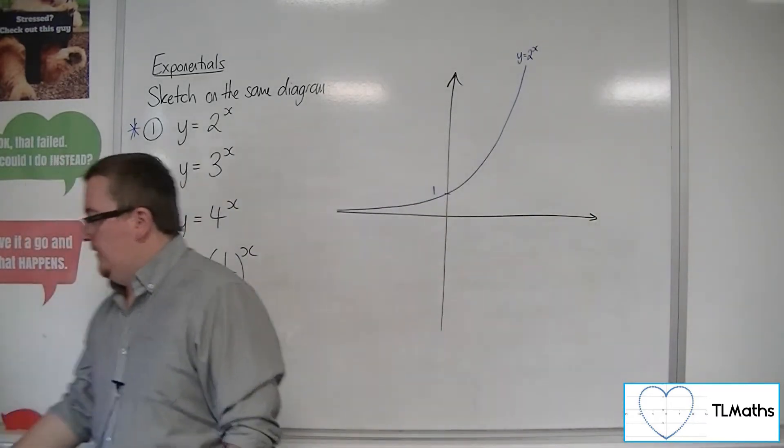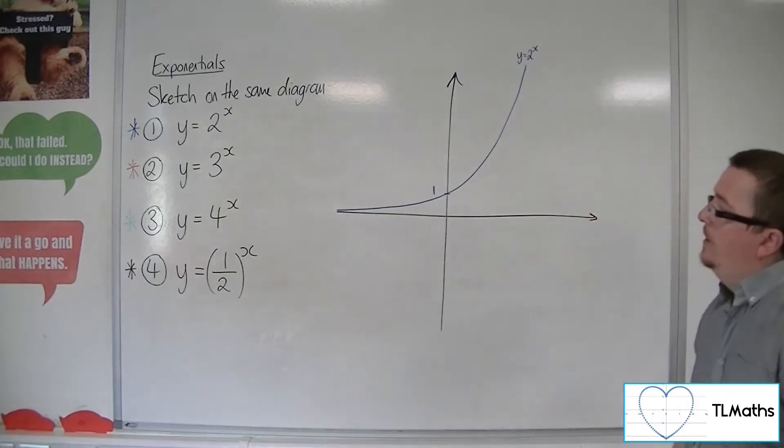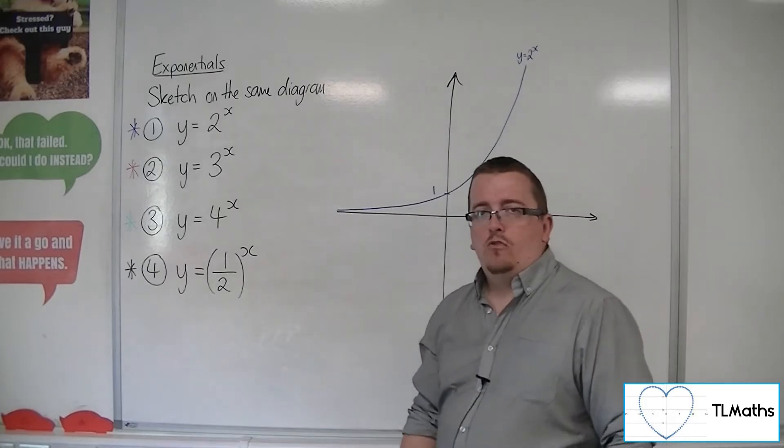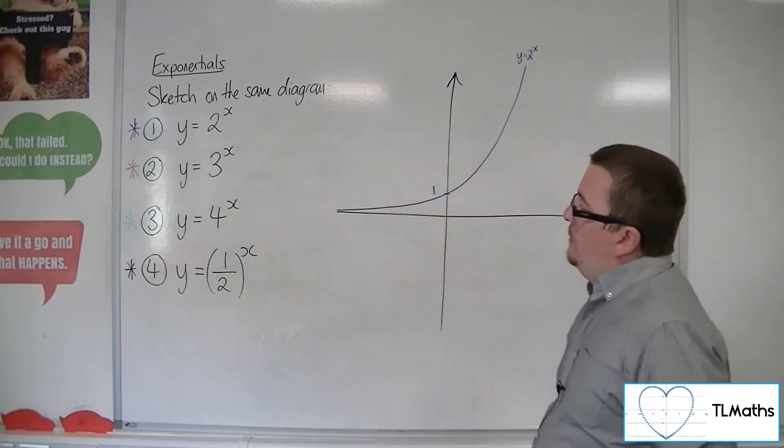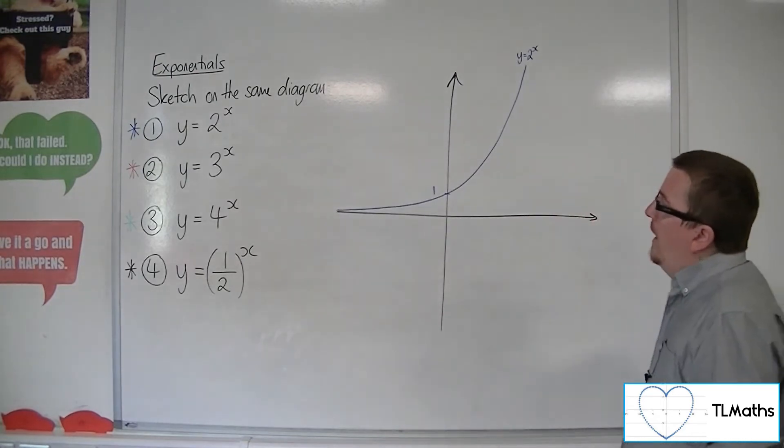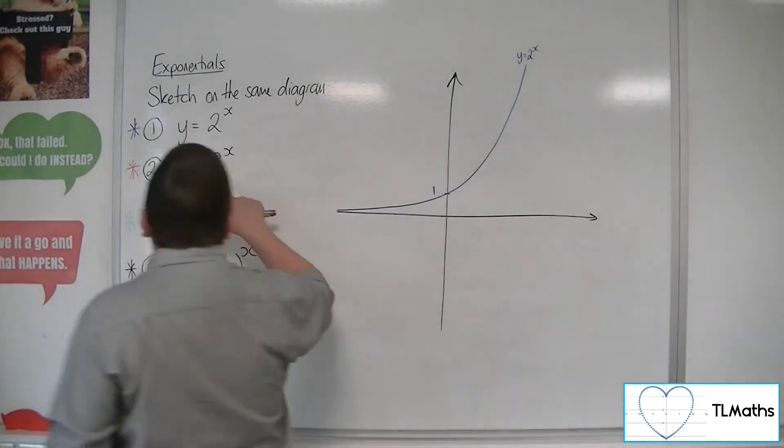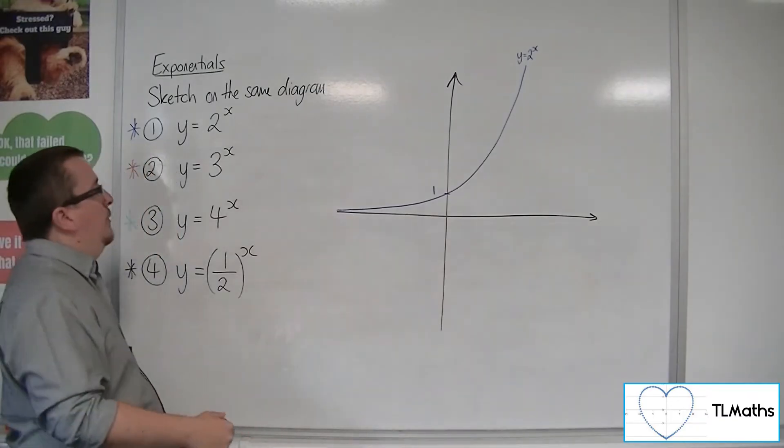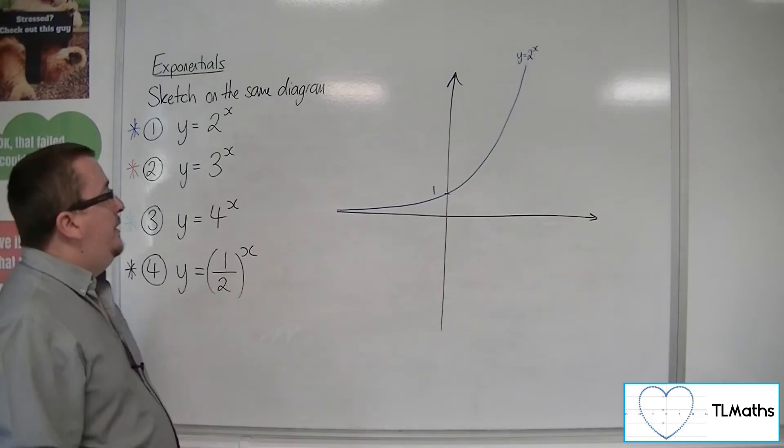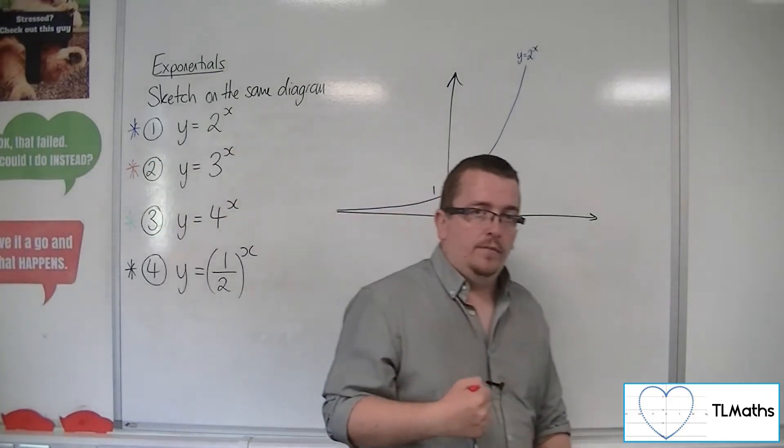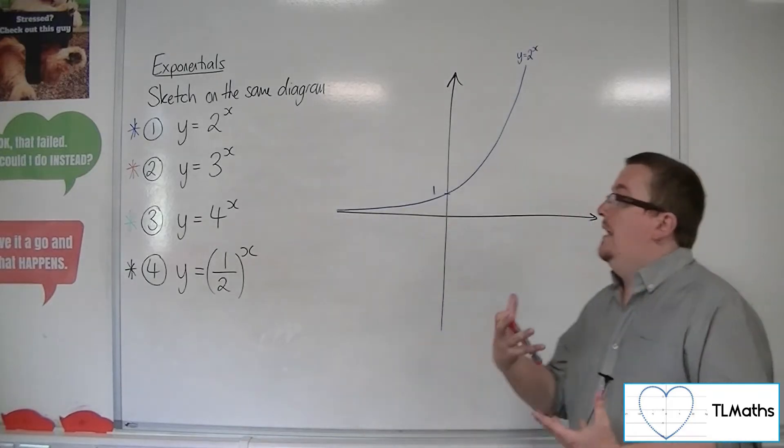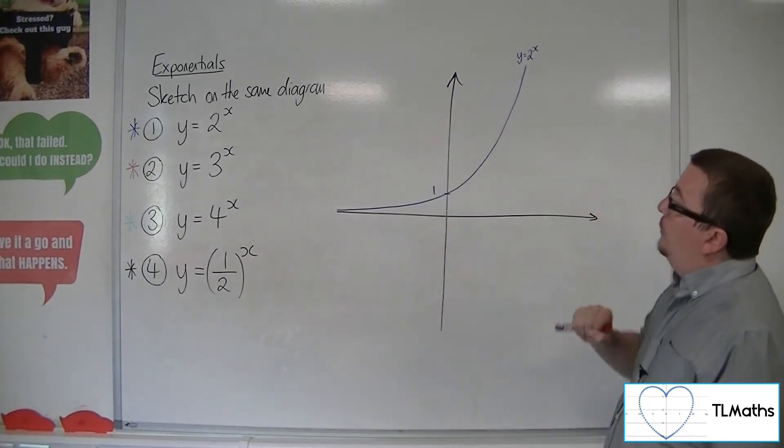The next one is y equals 3 to the x. When x is 0, you'll get 3 to the 0, which is 1, so I know that it goes through 1. Also, as x is increasing, so x is 1, 2, 3, we're going to get y values of 3, 9, 27.